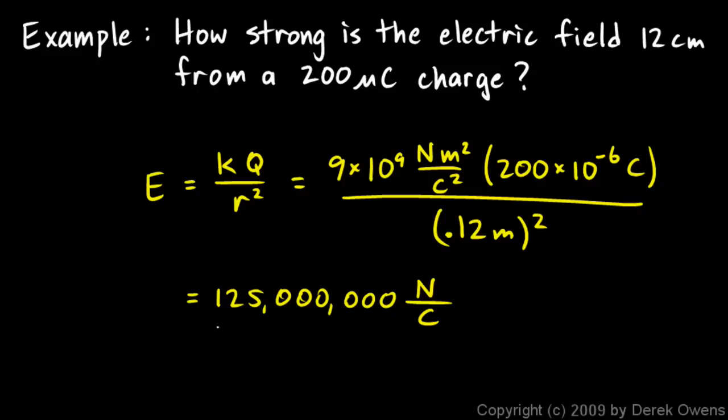So anyway there we have it. 125 million newtons per coulomb. That's just an example of the use of this equation. The electric field intensity E at a distance r from charge Q.